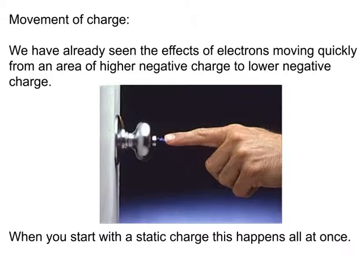We've already looked a little at movement of charge — for example, if you charge yourself up positively and then go to touch a doorknob, because you're short of electrons, electrons will jump from the doorknob to you, so the charges are moving. With static charge, this is just a one-time thing: a normalizing of charges between two different objects. It happens once and then it's done.